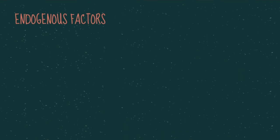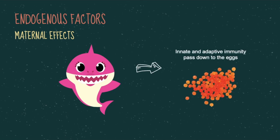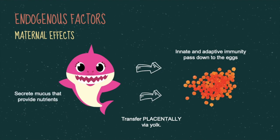Last but not least is maternal effects. The mother fish transfers innate and adaptive immune parameters to her eggs transplacentally via the yolk, to protect her young during early stages. The young essentially inherit their mother's immune system and are able to fight off diseases the mother has encountered. Certain mothers also secrete mucus, which provides nutrients for their larvae as a protective role.